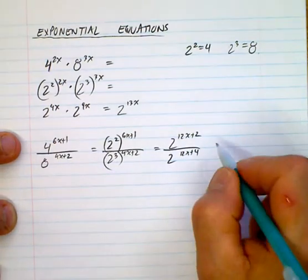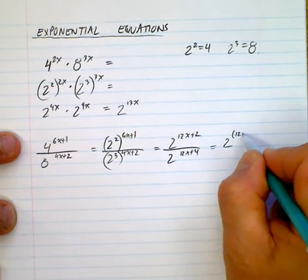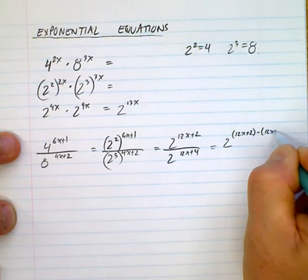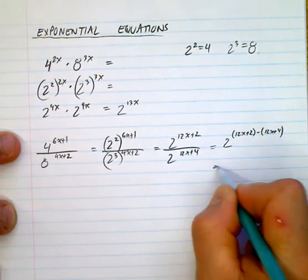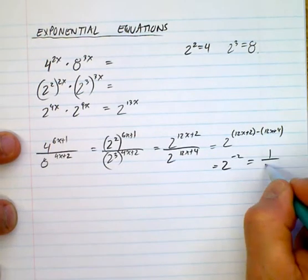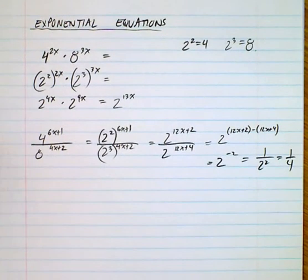And then we subtract it now, 2 to the power of 12x plus 2 minus 12x plus 4. And what you end up with is 2 to the power of negative 2, which is 1 over 2 squared, which is 1 quarter.